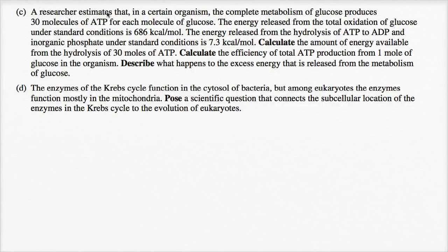Part C. A researcher estimates that in a certain organism, the complete metabolism of glucose produces 30 molecules of ATP for each molecule of glucose. The energy released from the total oxidation of glucose under standard conditions is 686 kilocalories per mole. The energy released from the hydrolysis of ATP to ADP and inorganic phosphate under standard conditions is 7.3 kilocalories per mole. Calculate the amount of energy available from the hydrolysis of 30 moles of ATP. Calculate the efficiency of total ATP production from one mole of glucose in the organism. Describe what happens to the excess energy that is released from the metabolism of glucose.